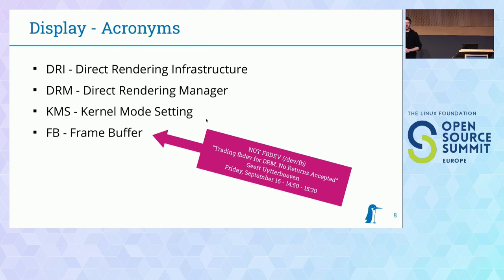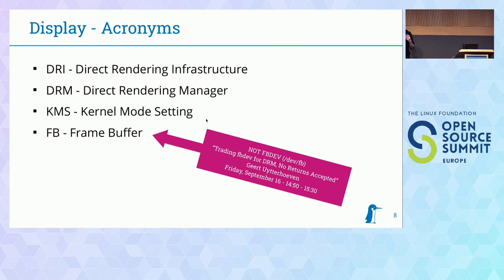Some acronyms: DRI means Direct Rendering Infrastructure — it is the overall infrastructure of the Linux graphics stack. The Direct Rendering Manager, DRM, is the kernel component of DRI, so DRM is part of DRI. KMS is Kernel Mode Setting, which is part of DRM and is especially responsible for driving a display — mode setting means configuring the display for the data in the pixel buffers. And FB means frame buffer, which is the correct name for the pixel buffer. Frame buffer and pixel buffer are usually interchangeable.